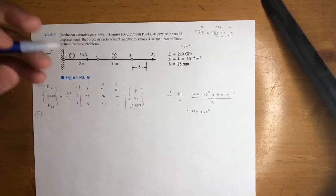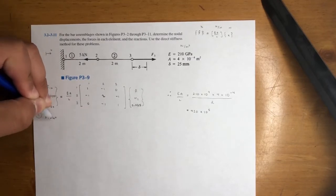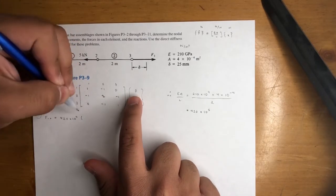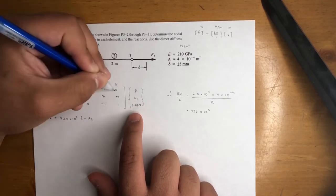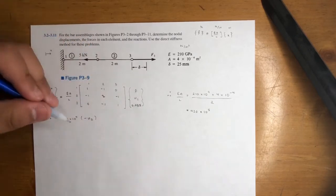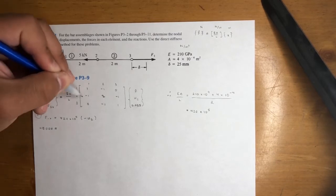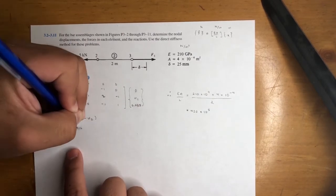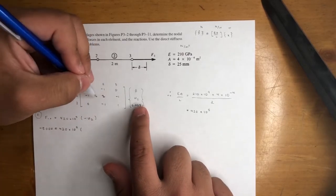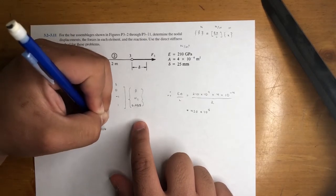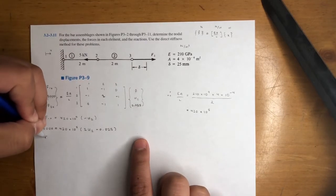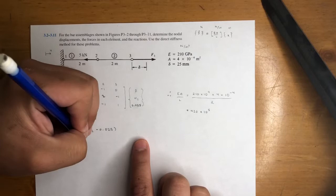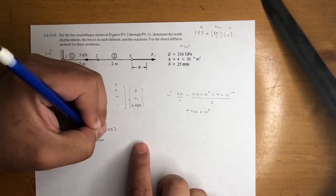So we can go ahead and start writing the equations, plugging in this number. The first equation is F1X = 420 × 10⁵ × (1·0 + (-1)·U2 + 0·0.025) = 420 × 10⁵ × (-U2). The second equation: -5,000 = 420 × 10⁵ × (-1·0 + 2·U2 + (-1)·0.025) = 420 × 10⁵ × (2U2 - 0.025). The third: F3X = 420 × 10⁵ × (-1·U2 + 0.025).